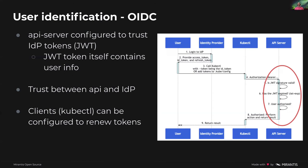So from a processing point of view, OpenID Connect is much simpler than the webhook approach. Clients like kubectl can also be configured to automatically handle token renewal with the identity provider — dealing with access tokens, ID tokens, refresh tokens, and other configurable things.